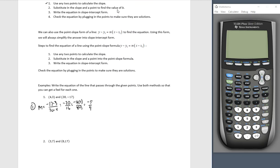Substitute in the slope and a point to find the value of b. So in our equation y equals mx plus b, I know the value of m. And I could use either of these two points. Of course I'm going to use the 4, 3.